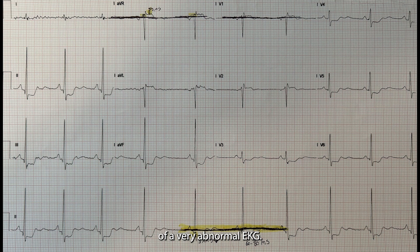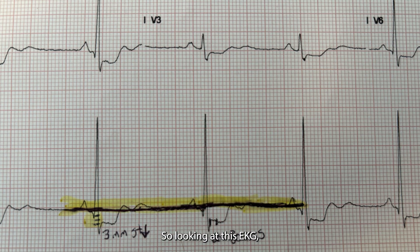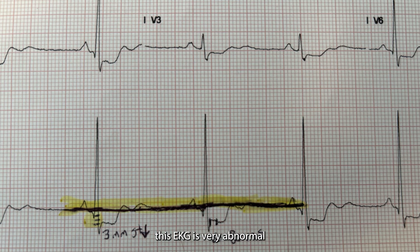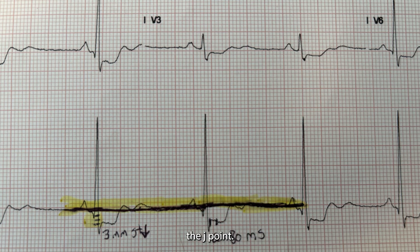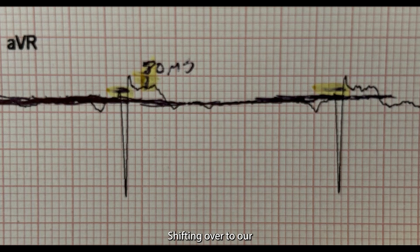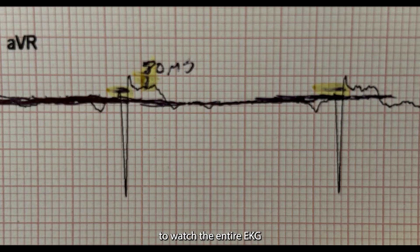Here is a good example of a very abnormal EKG. Looking at this EKG, I've got the isoelectric line highlighted, which is where we look for millimeters of ST segment depression and elevation. This EKG is very abnormal, showing 3 millimeters of downsloping ST segment depression, 60 to 80 milliseconds after the J point. Shifting to the AVR lead, we can clearly see 1 millimeter of ST elevation, 60 to 80 milliseconds after the J point — this is why it's extremely important to watch the entire EKG.